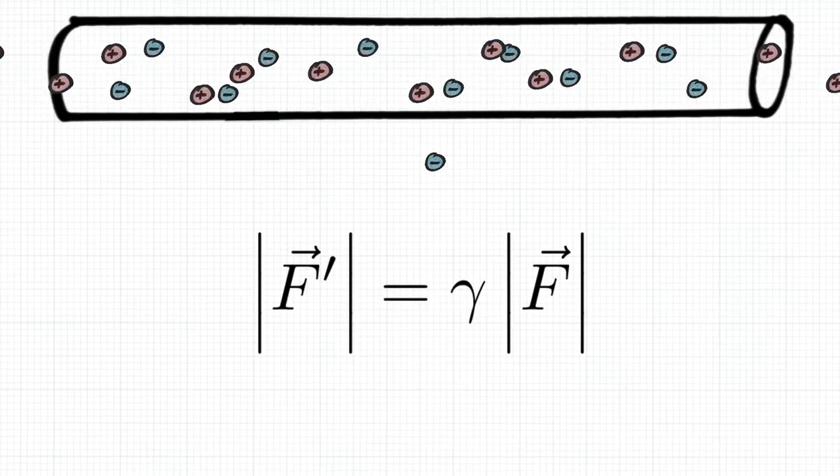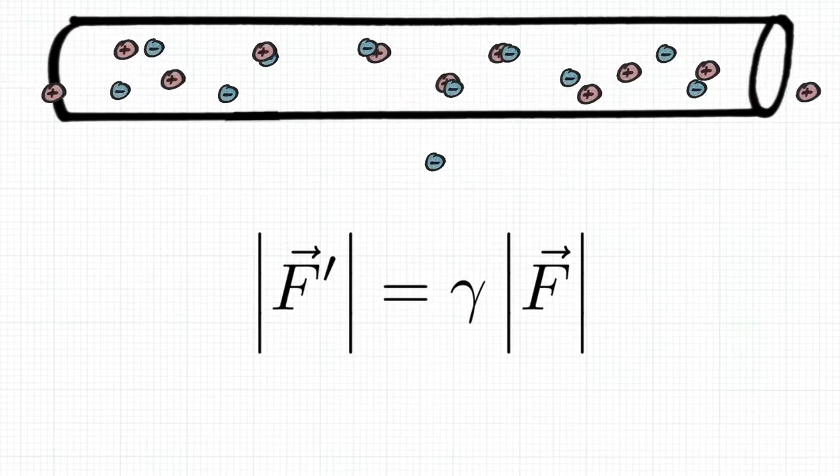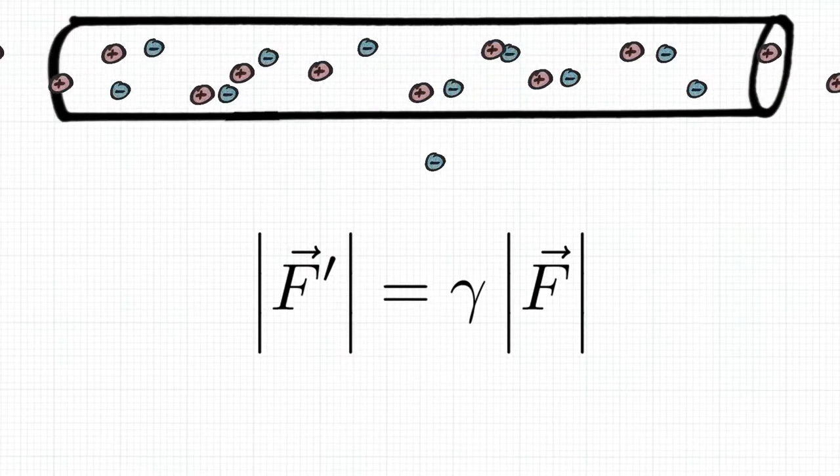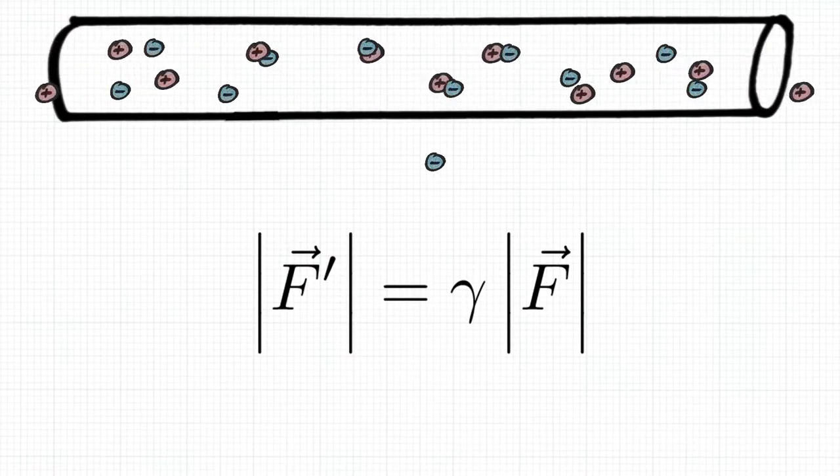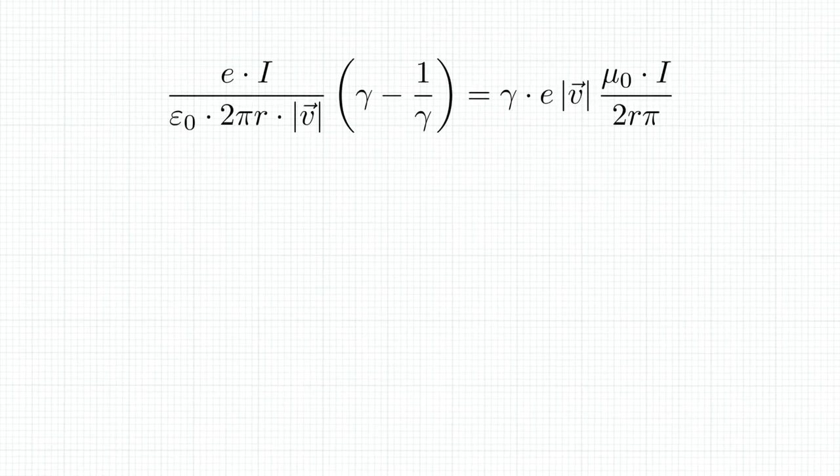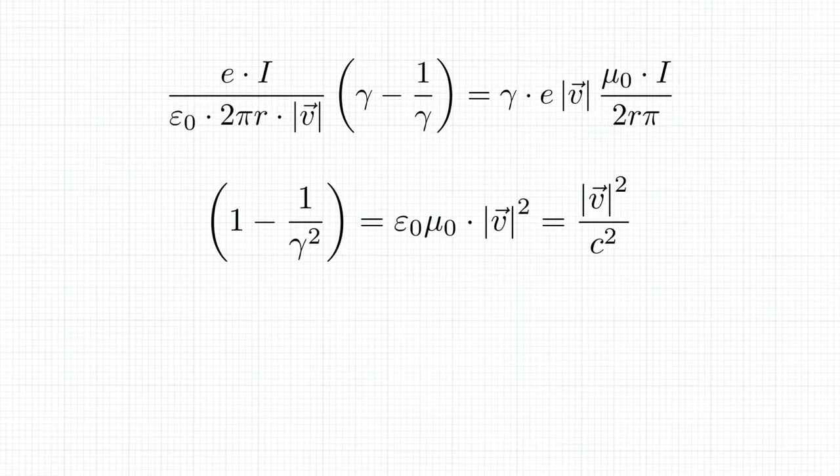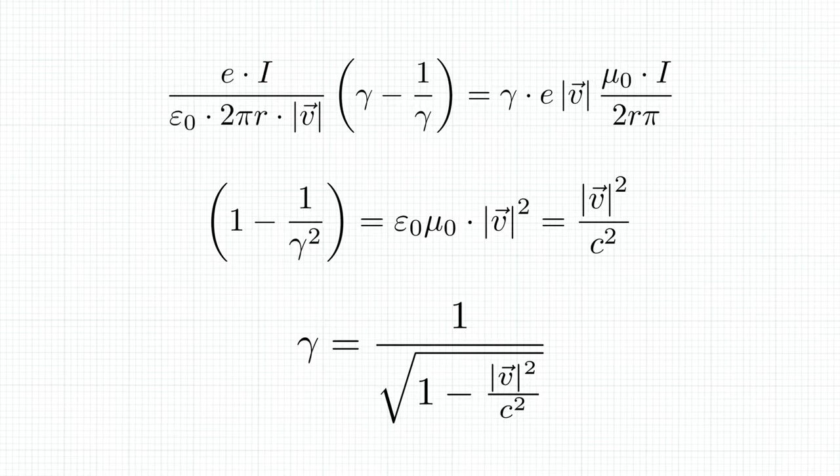It is actually not hard to show why forces behave like that, but this video is long enough as it is, so you gotta believe me that f prime equals gamma f. Now all that's left to do is equate the forces and sneak that additional gamma in and solve for gamma. The only interesting thing that happens here is that epsilon 0 mu 0 is 1 over c squared, which is part of Maxwell's theory, and we get an expression for gamma.